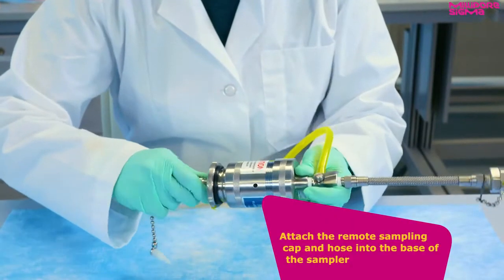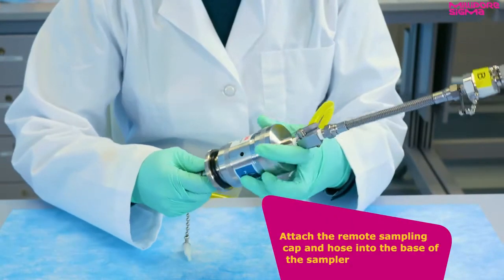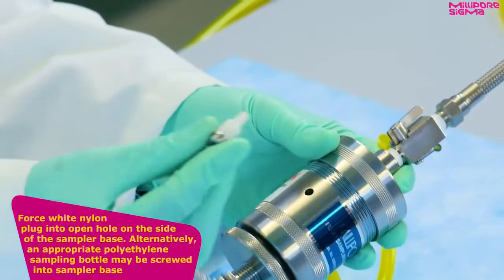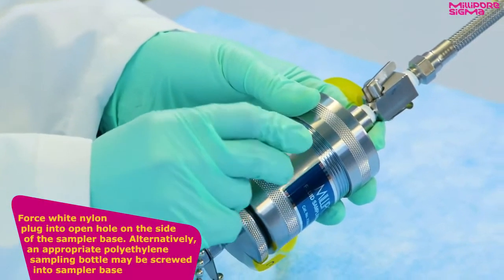Attach the remote sampling cap and hose into the base of the sampler. Next, force the white nylon plug into the open hole on the side of the sampler base.